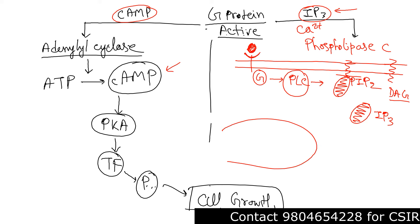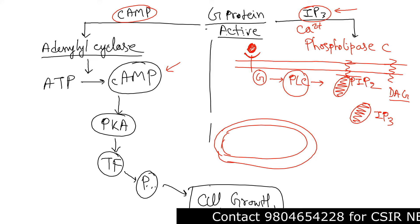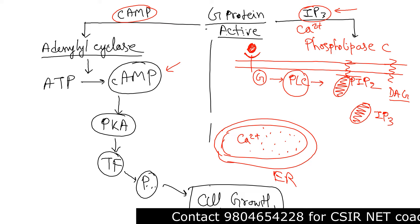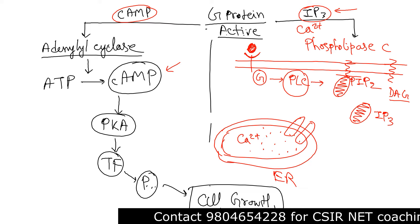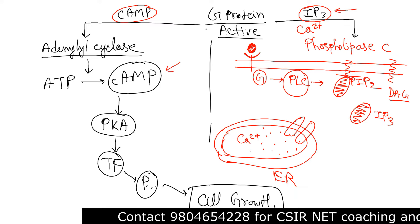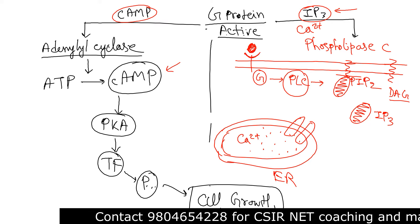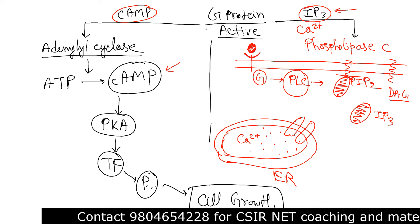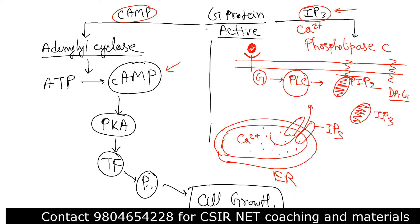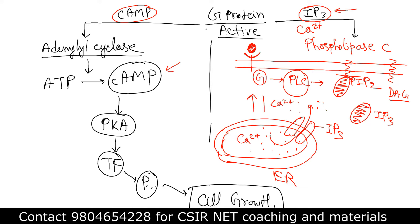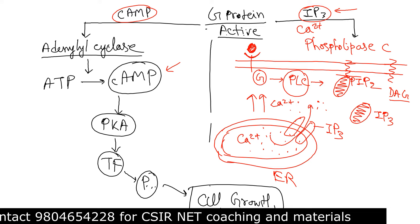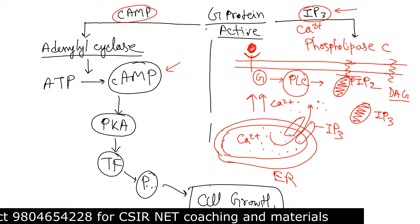There is an endoplasmic reticulum inside the cell that is filled with calcium. The endoplasmic reticulum also has calcium channels, but these are gated channels — normally the gate remains closed. When IP3 comes and binds to these calcium channels present in the ER, the channel opens up. Calcium starts flowing into the cytosol, creating a rapid increase in calcium ion concentration in the cytosol. We call this calcium influx in the cytosol.